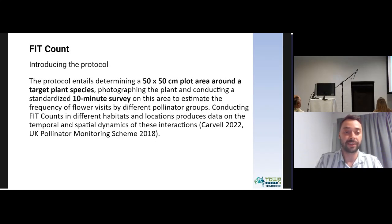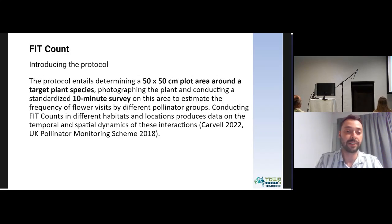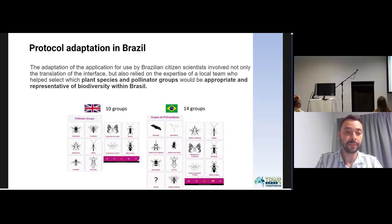It's a very simple protocol. Basically we set a 50 square centimeter area around a target plant species. We have a list of plants in the app that citizen scientists can choose from, but they can also select completely different plants and type the name — the scientific name or the vernacular name. Then they have to count the number of flowers in that plant, and for 10 minutes count all the flower visitors they can spot in the area.